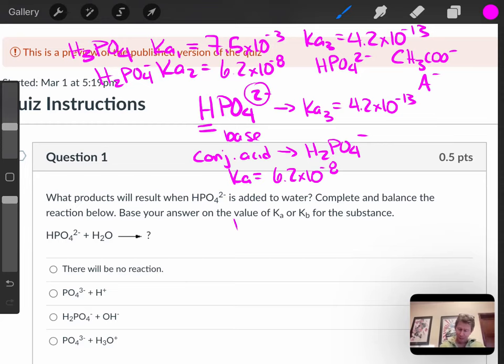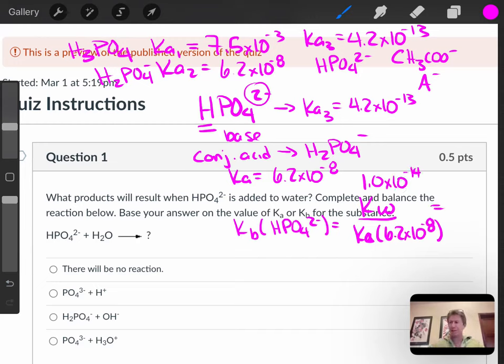Therefore, Kb for HPO4^2- is going to be Kw over Ka of 6.2 times 10 to the minus 8. Kw is 1.0 times 10 to the minus 14. So plugging that into our calculator, I'm going to do 1.0 times 10 to the minus 14 divided by 6.2 times 10 to the minus 8. I get 1.6 times 10 to the minus 7.